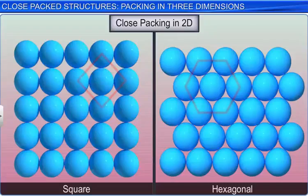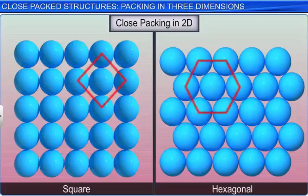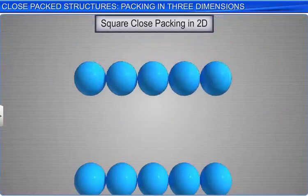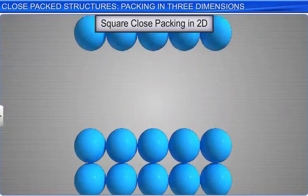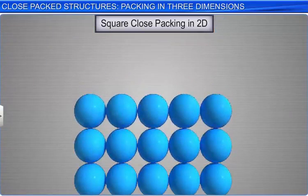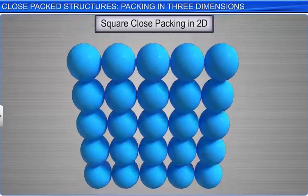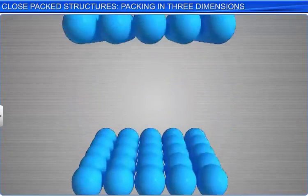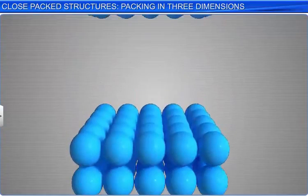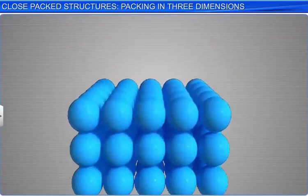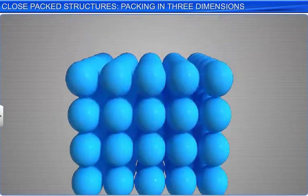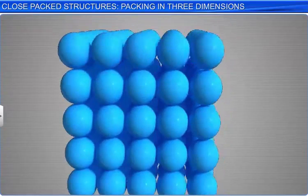We will extend our knowledge of close packing in two dimensions to build symmetrical patterns in three dimensions. Let's first study three-dimensional close packing from two-dimensional square close packing. In order to build a three-dimensional structure, it is easier to stack two-dimensional square close packed planes one above the other.